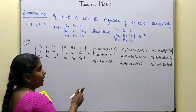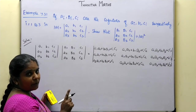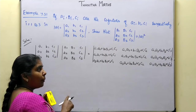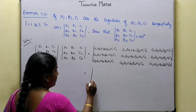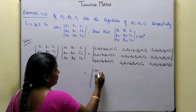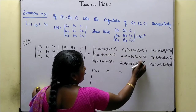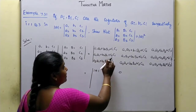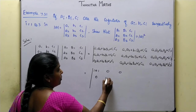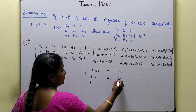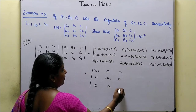Now we apply the concept of corresponding co-factor. We replace using the determinant of A. Diagonal elements are the corresponding co-factor — each diagonal entry equals the determinant of A. The off-diagonal entries are zero. So we get: det(A), 0, 0; 0, det(A), 0; 0, 0, det(A).